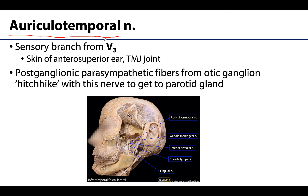The auriculotemporal nerve is a branch of V3 — and that geographic relationship to V3 is important. The auriculotemporal nerve is an entirely afferent or sensory branch that will innervate skin of the anterior superior ear as well as skin around the temporomandibular joint. That skin is very close to the parotid gland, making this a good route for those postganglionic parasympathetic fibers to reach the parotid gland. When stimulated, this can cause saliva secretion from the parotid.